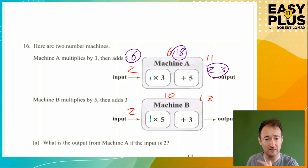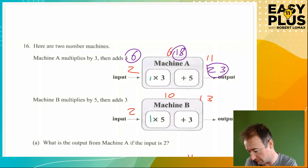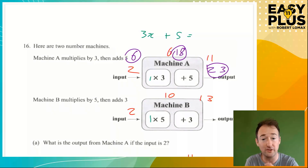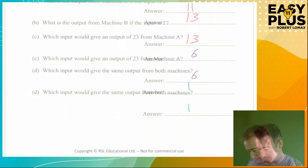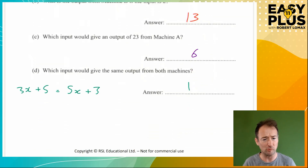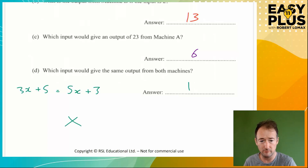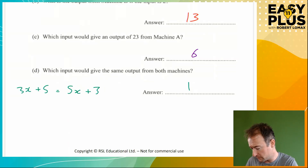We need the same number going in each case to give the same number coming out in each case. So we're going to have x times 3 — which we'd write as 3x in algebraic notation — plus 5, giving the same result as machine B: 5x, that's x times 5, plus 3. So we've got 3x plus 5 equals 5x plus 3. Note: when writing algebraic x, use a curly x to make it clearly different from a multiplication sign.